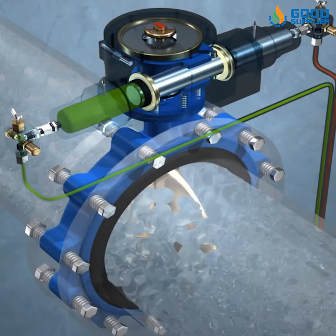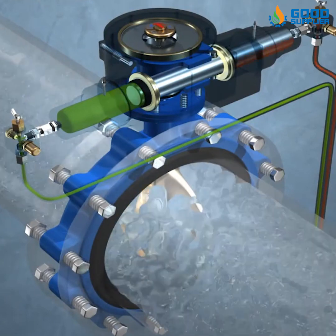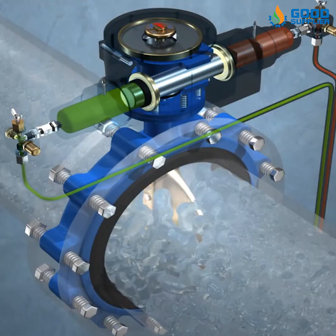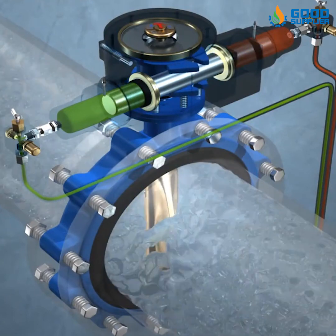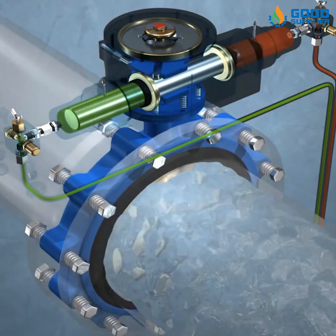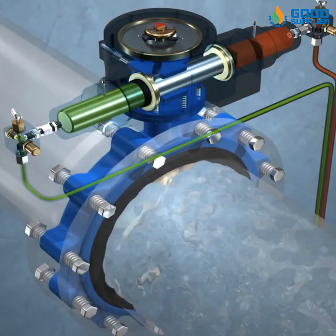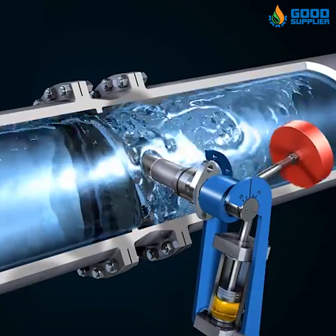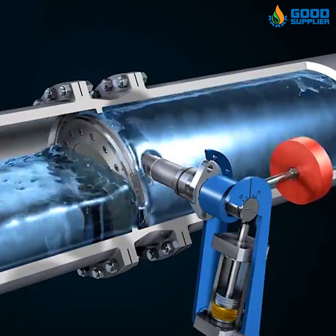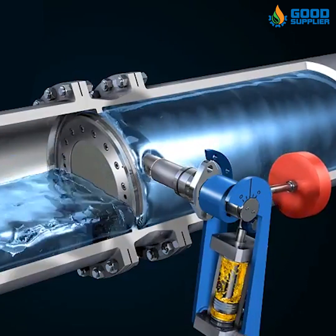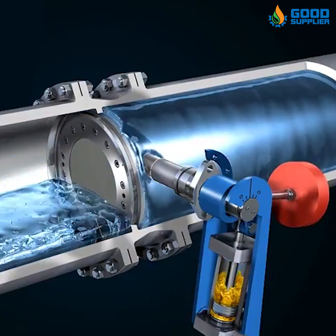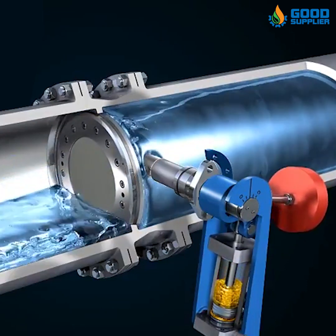The mechanical motion gives an output in linear, rotary, or oscillatory motion. A hydraulic actuator can exert considerable force because liquids are nearly impossible to compress.